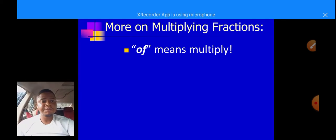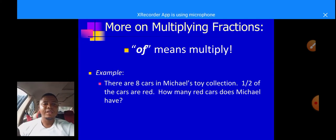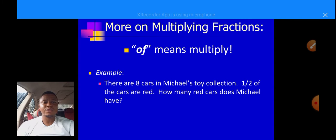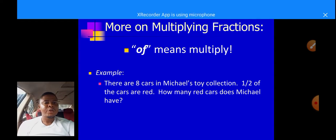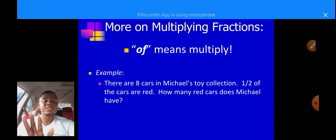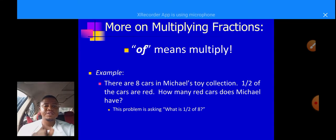When you have 'of' in mathematics, it simply means 'times' — it means multiply. For instance, there are eight cars in Michael's toy collection. One over two of the cars are red. How many red cars does Michael have? This question is given in words. How do we express it mathematically? This problem is asking you: what is half of eight?